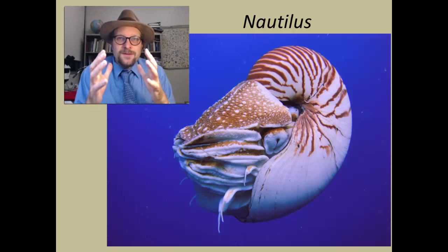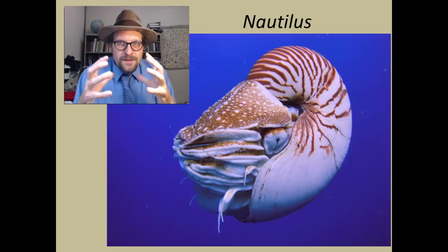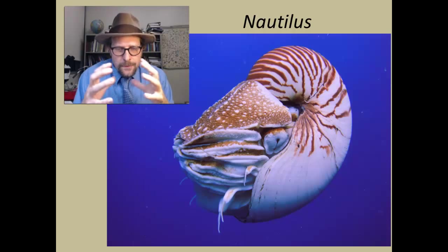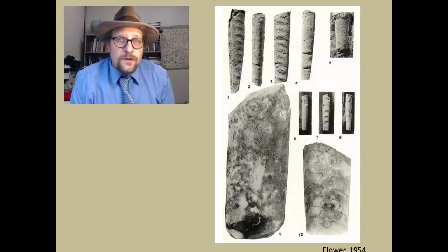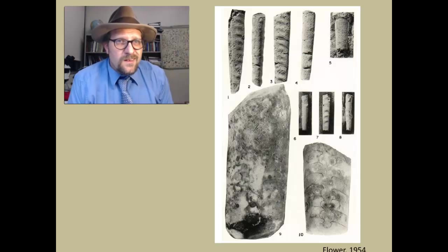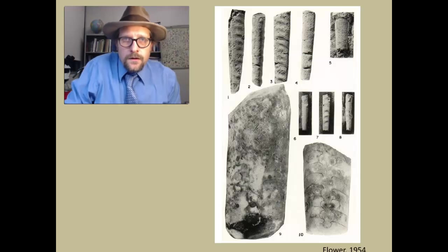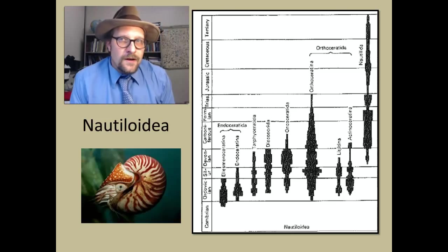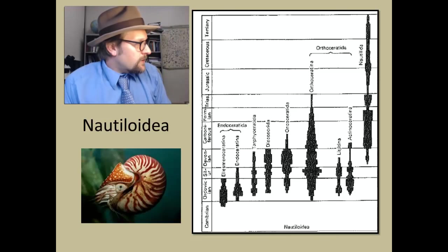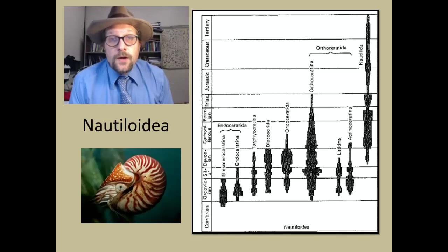The oldest cephalopods are found in the late Cambrian, such as the rather straight shells of the Plectronoceras. But quickly afterward, coiled cephalopods become very common and diverse. The nautiloidea were very common during the Ordovician to the Carboniferous. Today nautilus is a small remnant of this once very diverse group.